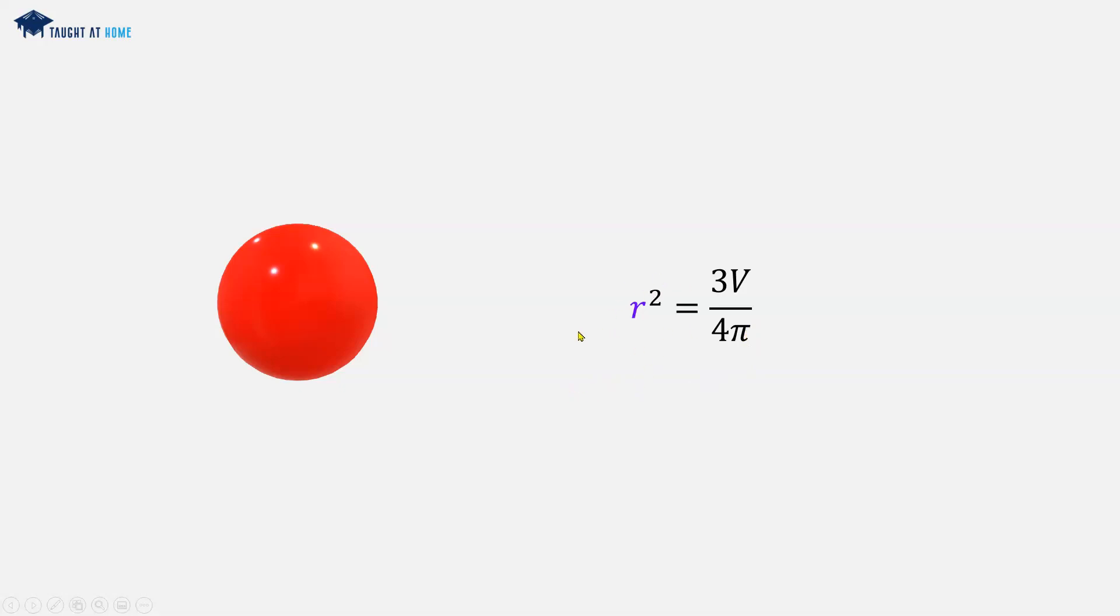It's r squared. So to remove the square term and just to have r on its own, we can take the square root of both sides. Because now the square root of a square, we're just left with the r. And so r is equal to the square root of 3 v over 4 pi.